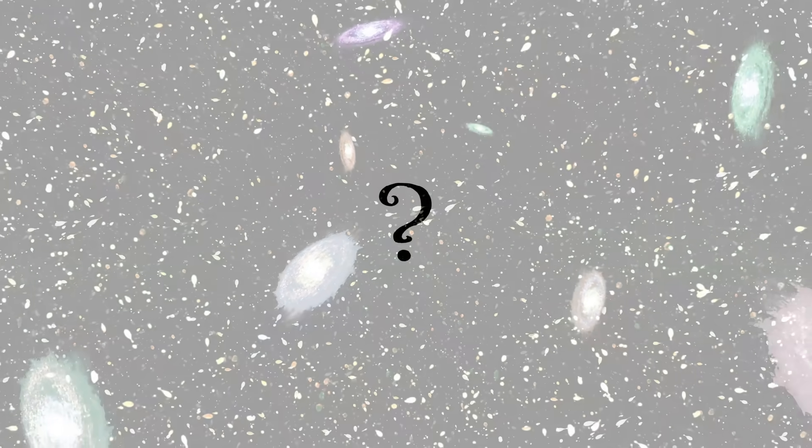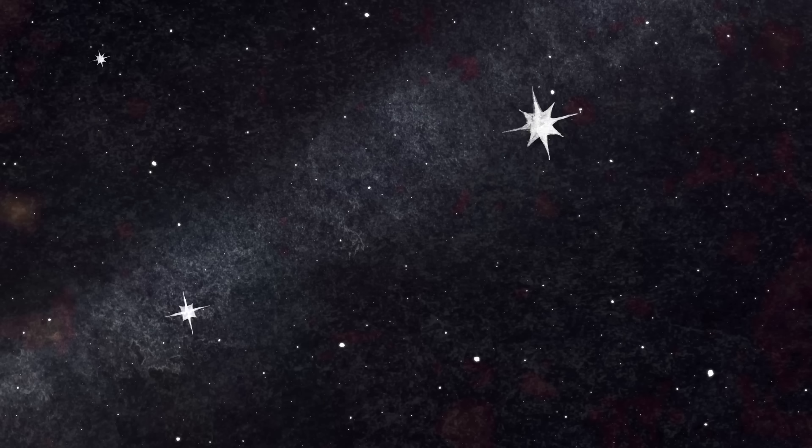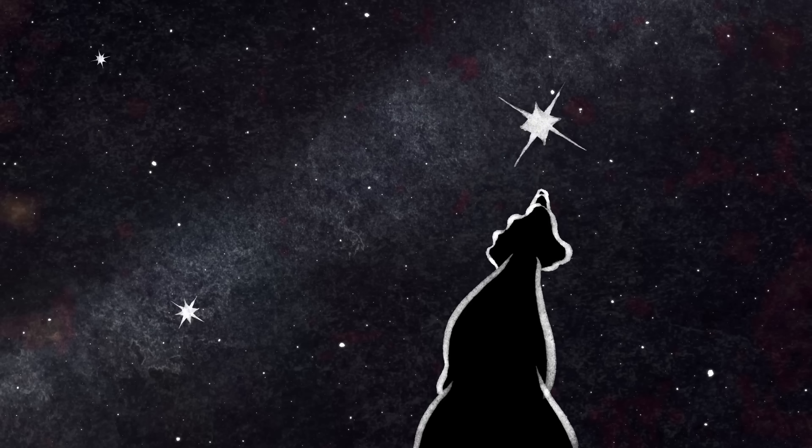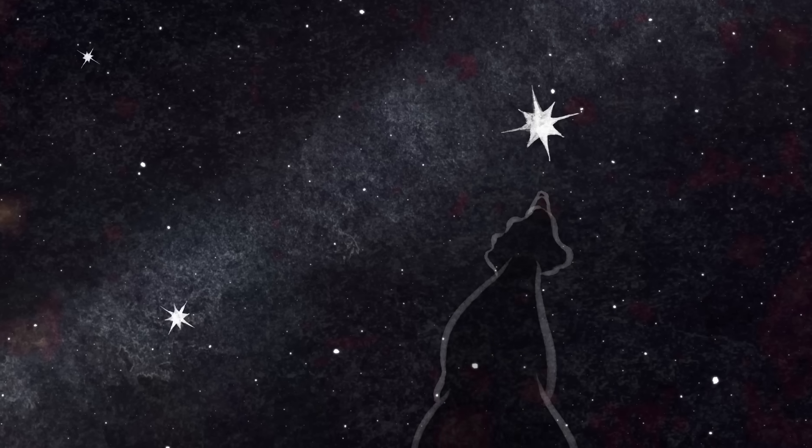But wait, how do we know how far away stars and galaxies are? After all, when we look at the sky, we have a flat, two-dimensional view. If you point your finger to one star, you can't tell how far this star is. So how do astrophysicists figure that out?